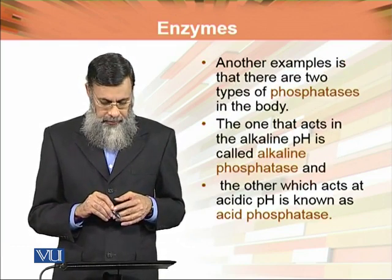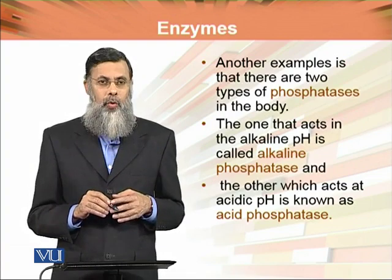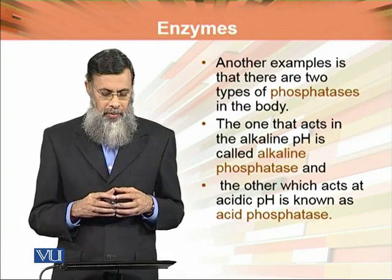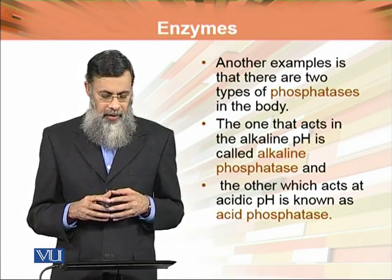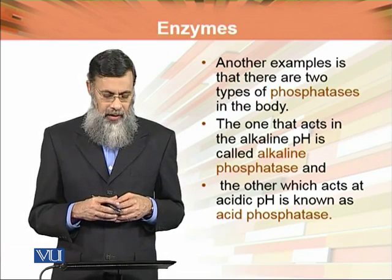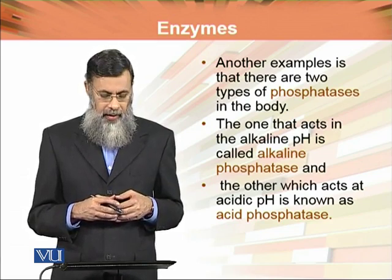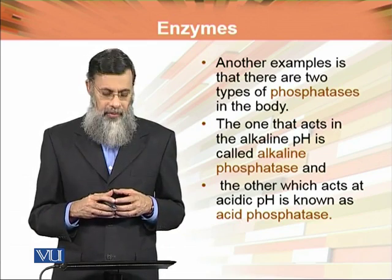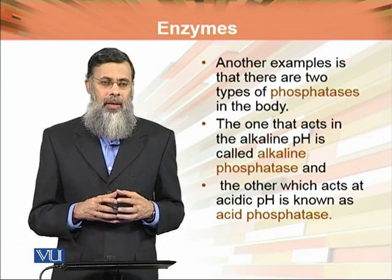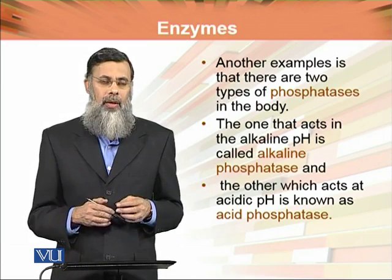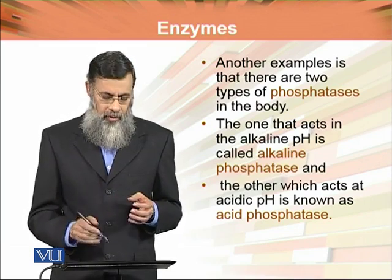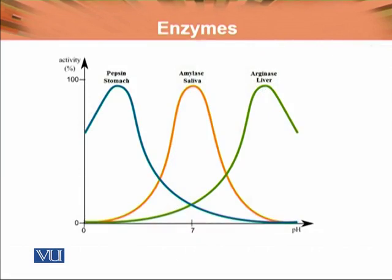Another example is that there are two types of phosphatase in the body. One is the alkaline phosphatase and the other is the acid phosphatase. The one that acts at alkaline pH is called alkaline phosphatase, and the other which acts at acidic pH is known as acid phosphatase. Toh dono ki activity ko pH differently affect karti hai.